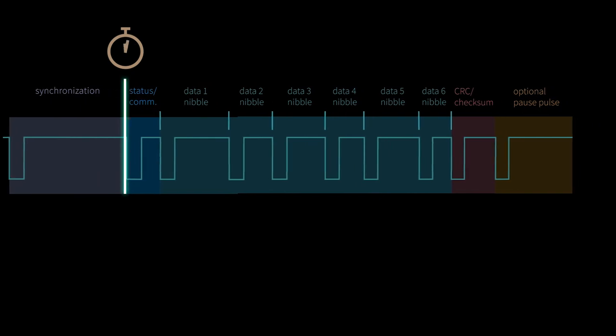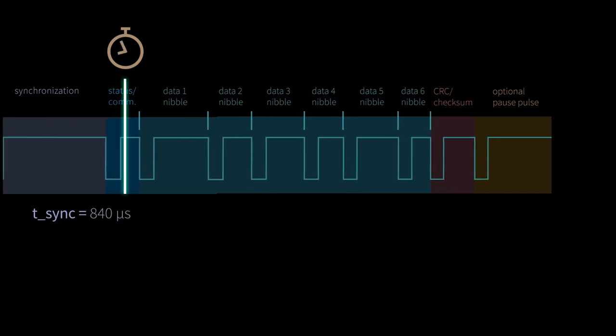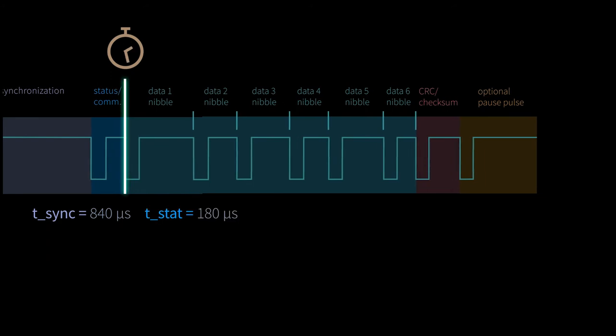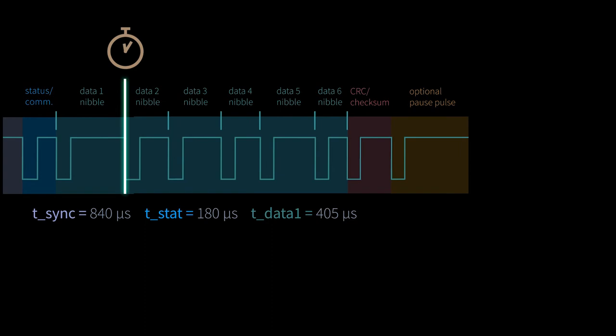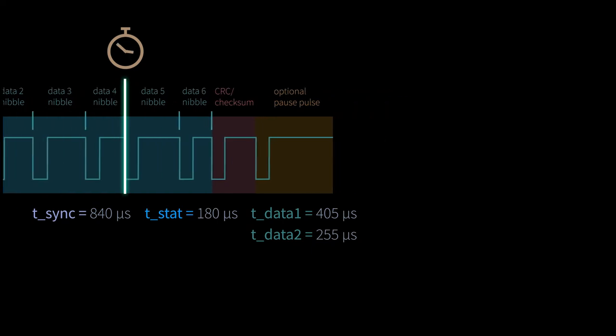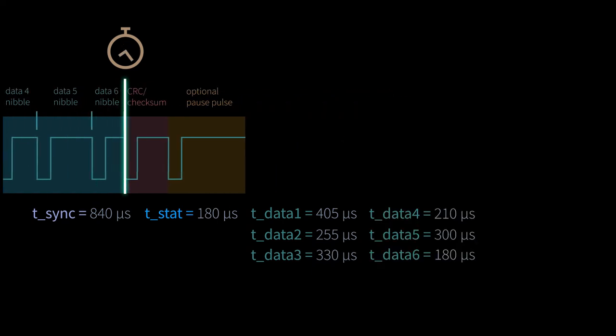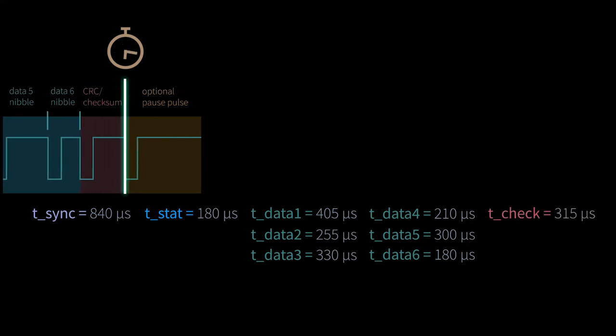For the synchronization pulse, 840 microseconds. For status and communication, 180 microseconds. For data 1, 405 microseconds. For data 2, 255 microseconds. For data 3 to 6 following values, and for the check sum 315 microseconds.